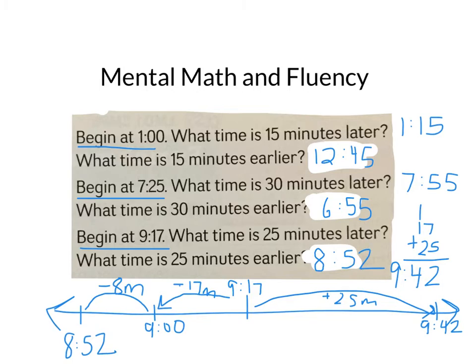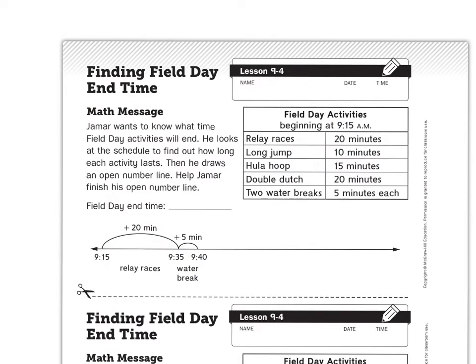All right, here we go. Now I would love for you to take out your Homelink packet. And you are looking for a piece of paper that has two of the same problems on it and one of them crossed off. And it looks like this. It says, Finding Field Day End Times. This is a blue piece of paper in your Homelinks packet. And on the bottom, this guy is crossed off and it says, Not Needed. We're just going to use the top part today. Here we go.